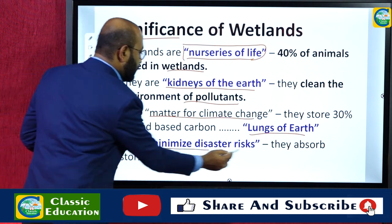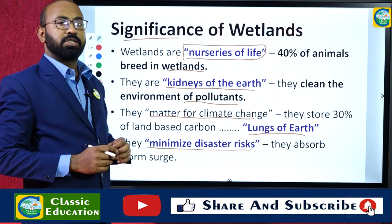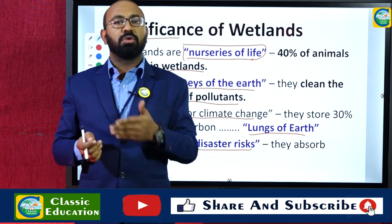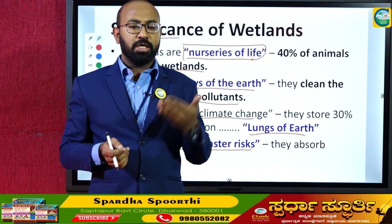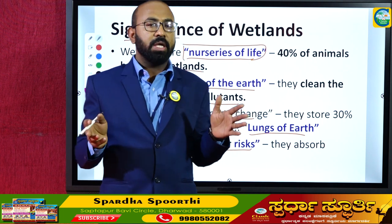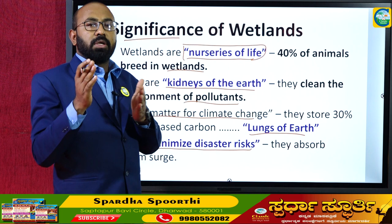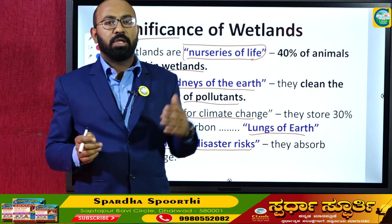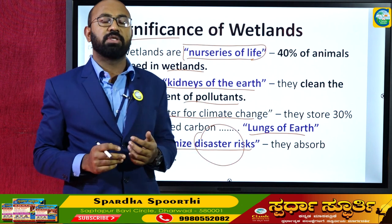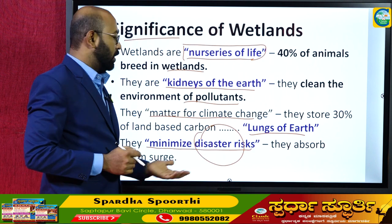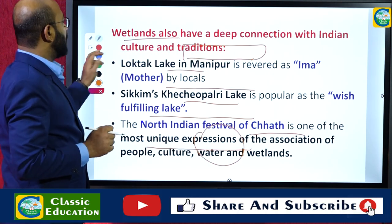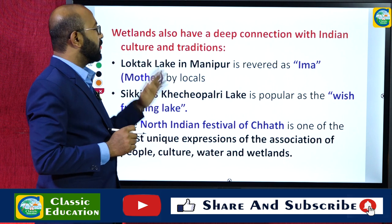Wetlands also minimize disaster risks. In coastal areas, mangrove forests — which are wetlands found in river deltas — act as barriers against wave activity and minimize risks during cyclones and tsunami events.